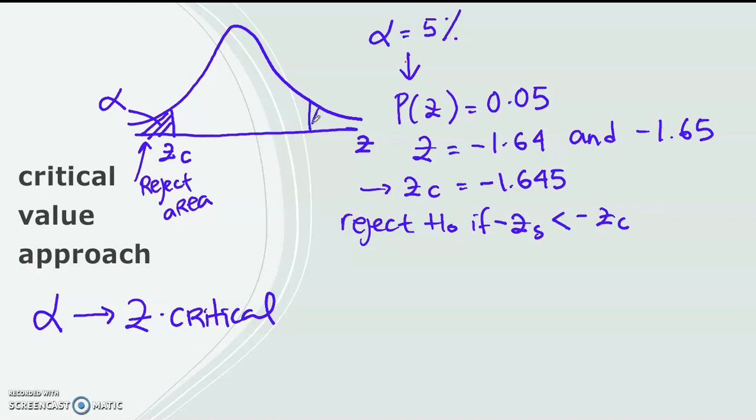So the same procedure, if you are doing a right tail test, then the rejection rule would be reject H0 if z statistic, now it's positive because in the right side, it will have a positive value greater than z-critical. Remember that the average is 0. For the z-value, the average is equal to 0.